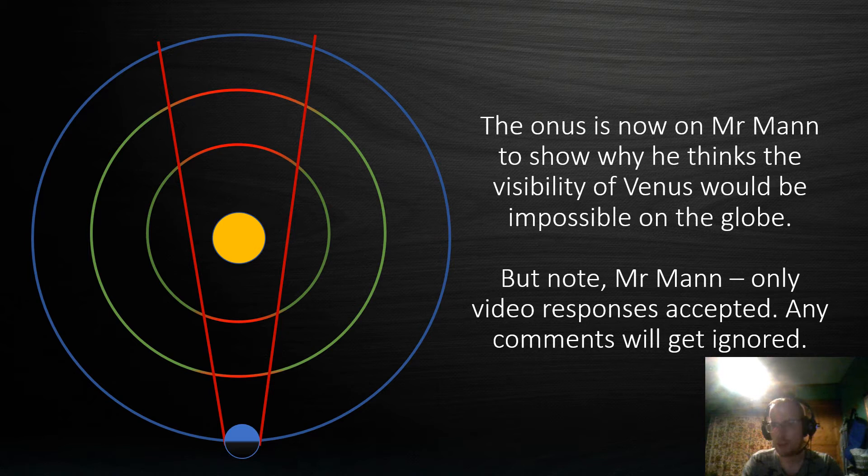What this means is the onus is now on Mr. Mann to show why he thinks the visibility of Venus would be impossible on the globe. But note Mr. Mann, only video responses are accepted following your rules. Any comments you might leave will be ignored.